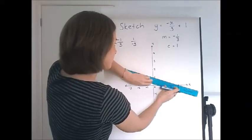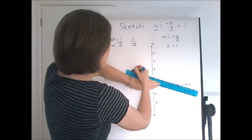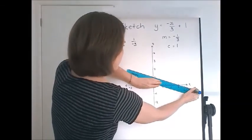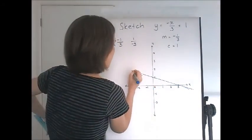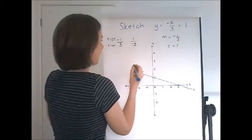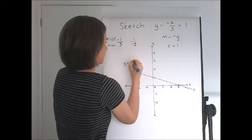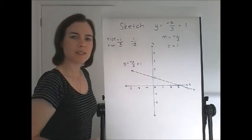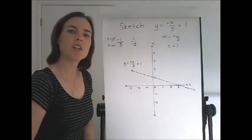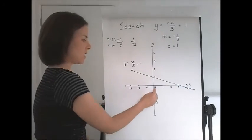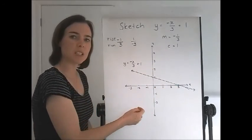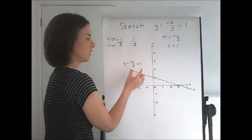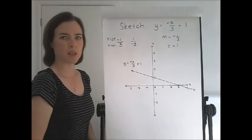We're ready to rule it in. Arrows on the ends. Label the line. And it's complete. But please don't skimp on those details that you need. You need the axes ruled and measured in pencil. You need them labelled with arrows. You need the line ruled, arrows, and labelled with the equation.